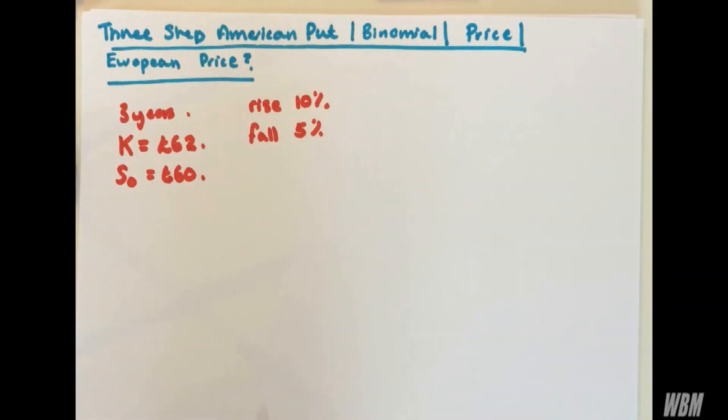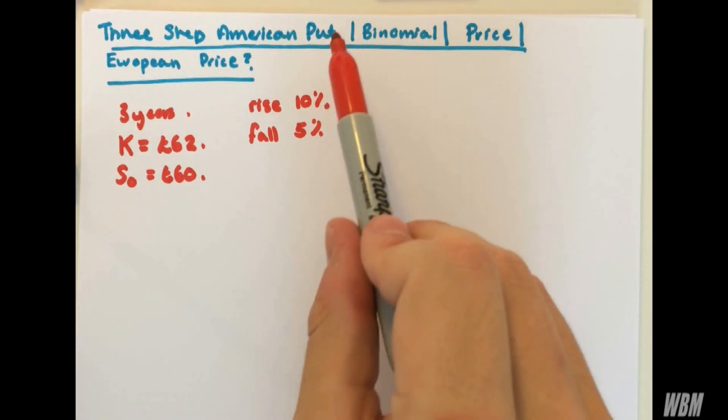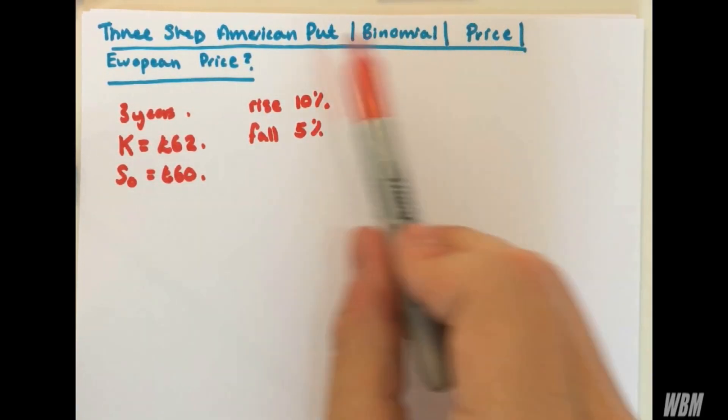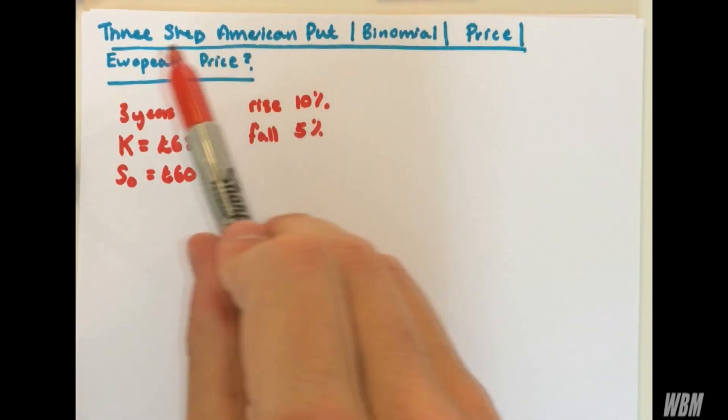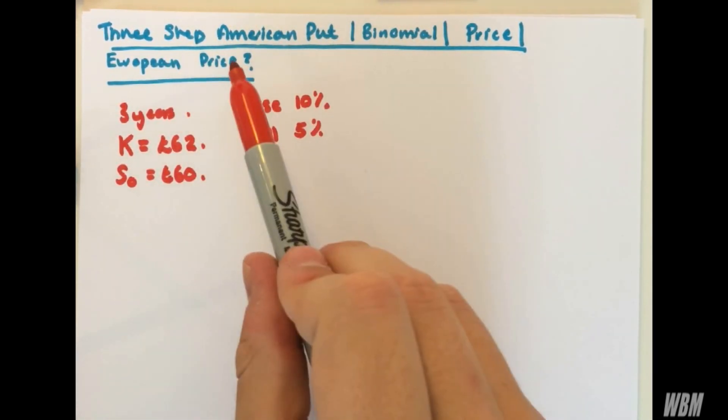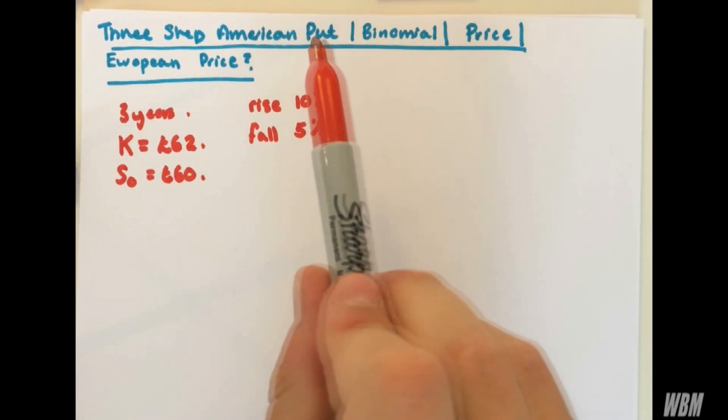This is a three-step American put option. We're going to evaluate it because it's binomial, and we're going to do binomial tree method. We're going to find the price of the American option, and we're also going to find the European price. It's quite a rare thing to have to do, find the European price of an American option, so I hope this helps all of you out.